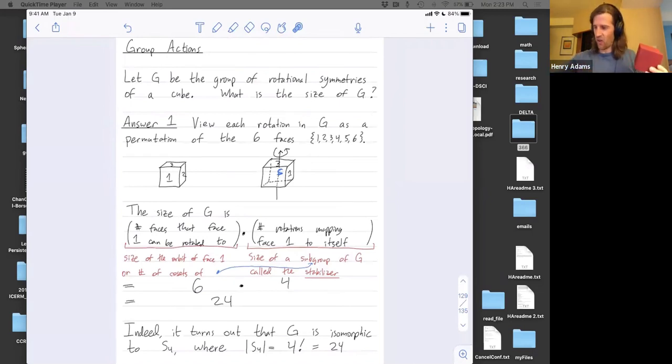We're going to count this 24 in one other way. The perspective we're using here is that this group of rotations is acting on some set. Here our set was the six faces. Let's try counting this again where our set is instead the eight vertices and see if we get the same answer or not.